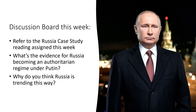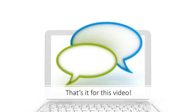Let's apply what we've learned in the discussion board this week. I want you to write about Russia — be sure to read the Russia case study called 'Oligarchy, Democracy and Authoritarianism in Russia.' Then consider these two questions: What's the evidence for Russia becoming an authoritarian regime under Putin? And why do you think Russia is trending in the direction it is, which is definitely towards authoritarianism? Have fun with this, and I'm looking forward to being part of that discussion. That's all for this video — be sure to view the other video in the unit before posting to the discussion board, and have a great week.